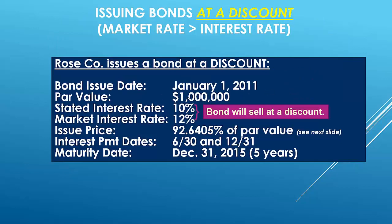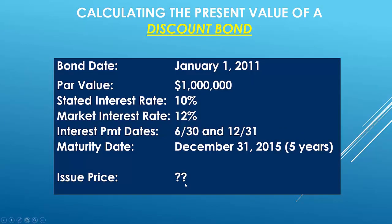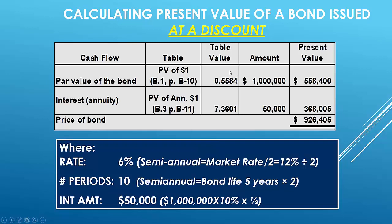If a bond is issued at a discount — for example, a $1,000,000 bond with a stated rate of 10% when the market pays 12% — the issuer won't receive the full million. Using present value calculations, the issue price might be $926,405. The journal entry records cash of $926,405, a discount on bonds payable of $73,595, and bonds payable of $1,000,000. At maturity, the full million must be repaid to bondholders regardless.